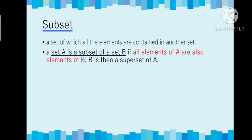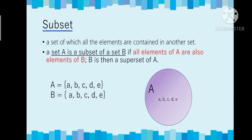Another example: A has elements {a, b, c, d, e} and B also has elements {a, b, c, d, e}. In a Venn diagram, A and B have the same elements. Since from the definition all elements of A must also be elements of B, we can still say that A is a subset of B.